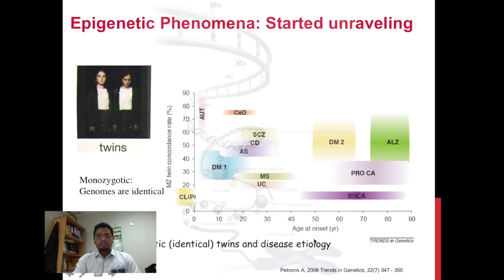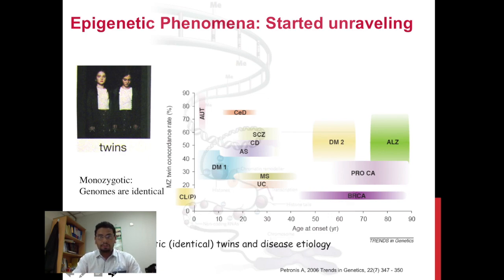These observations suggest that in some cases, epigenetic phenotypic differences in monozygotic twins are possible without any specific environmental cause. It is also important to note that the degree of twin discordance for various complex diseases does not necessarily correlate with age of onset. For example, concordance for Alzheimer's disease, which manifests predominantly in the eighth decade of life, can be as high as 83%, whereas concordance for early-onset diseases such as diabetes mellitus type 1 can be as low as 32%.